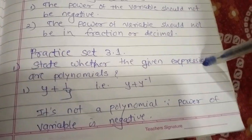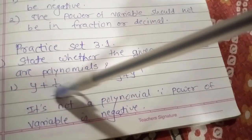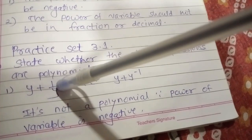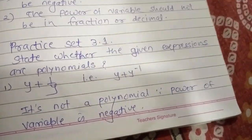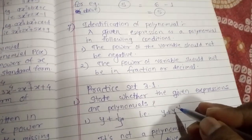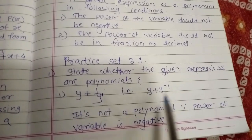Using all these concepts we will solve Practice Set 3.1. Question 1: state whether the given expressions are polynomials. First example: y + 1/y. Since y is in the denominator, putting y in the numerator makes the power -1. So here y has power 1, but 1/y has power -1. Since the power of the variable is negative, it is not a polynomial.